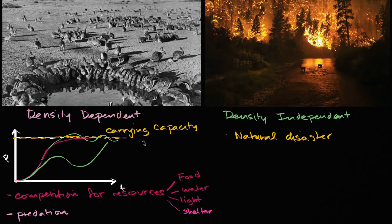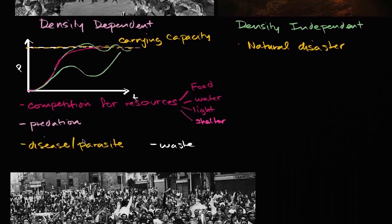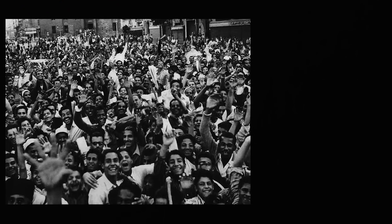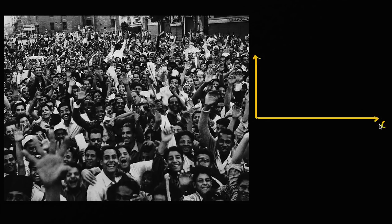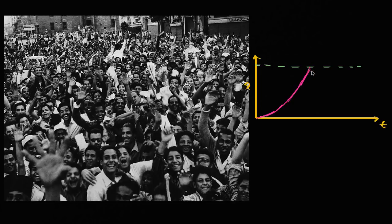With all this talk about carrying capacities and density dependent factors, you might be thinking about human beings. We are for sure a species, so the same ideas apply. Is there a natural carrying capacity for the environments we are in? Thomas Malthus — a famous philosopher and scientist, and I have a whole video on him — hypothesized that humanity had a serious problem because our populations were growing exponentially. He said there's a natural carrying capacity for human beings, and as we kept growing exponentially, we would hit that limit — the Malthusian limit.